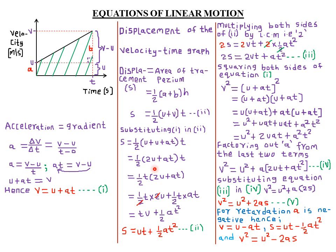Opening the bracket: one-half times t times 2u gives ut (since 2 and 2 cancel), plus one-half times t times at gives one-half at squared. Therefore s = ut + one-half at squared. This is our second equation of linear motion, where s is displacement, u the initial velocity, a the acceleration, and t the time.